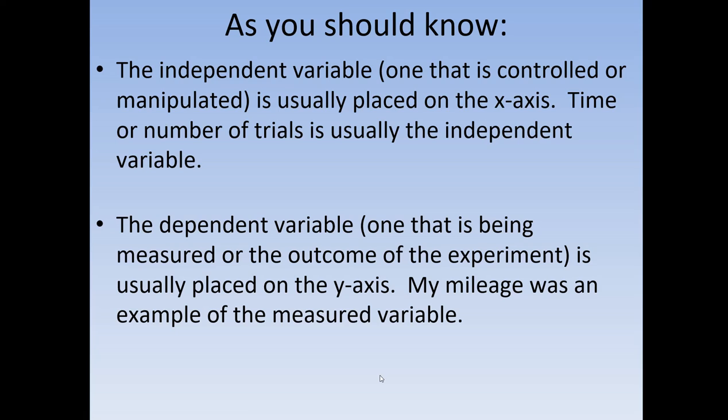So one of the things that you should have learned in previous classes is that you have two different variables, a dependent and an independent variable. The independent variable is what you are manipulating, and that's usually put on the x-axis. This could be things like number of trials, time, all that good stuff. The dependent is something that's going to be on the y-axis. It's what you're actually measuring based off of the independent variable.